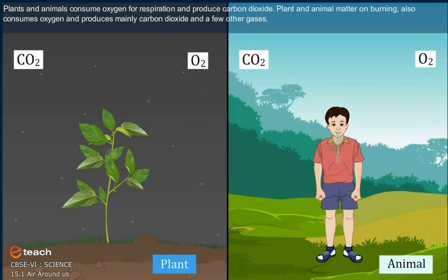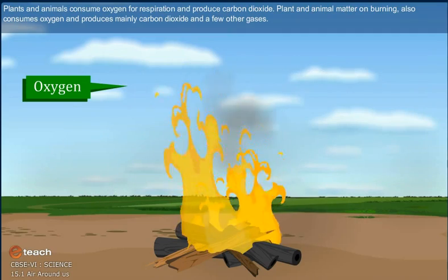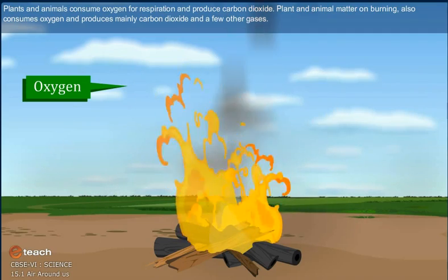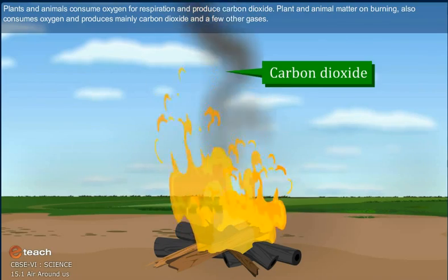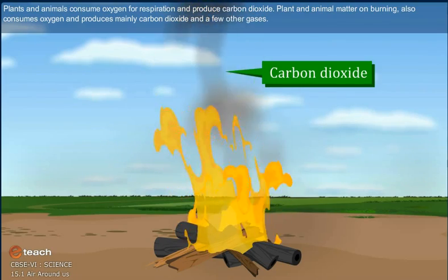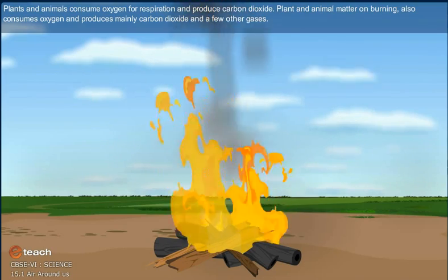Plants and animals consume oxygen for respiration and produce carbon dioxide. Plant and animal matter on burning also consumes oxygen and produces mainly carbon dioxide and few other gases.